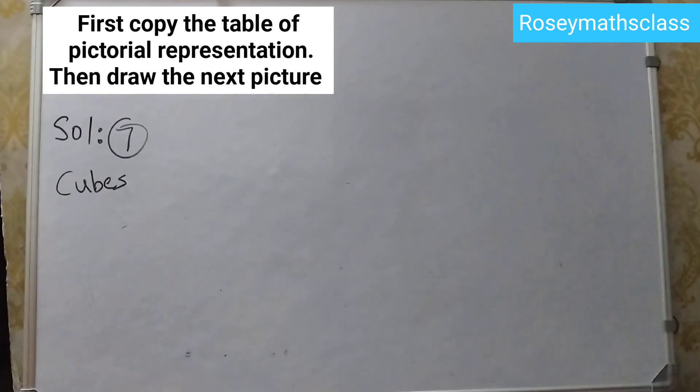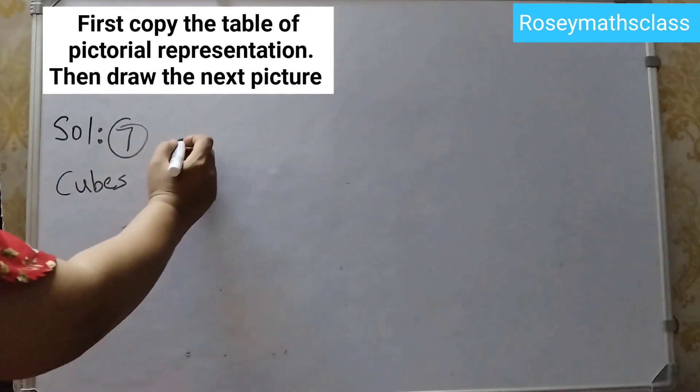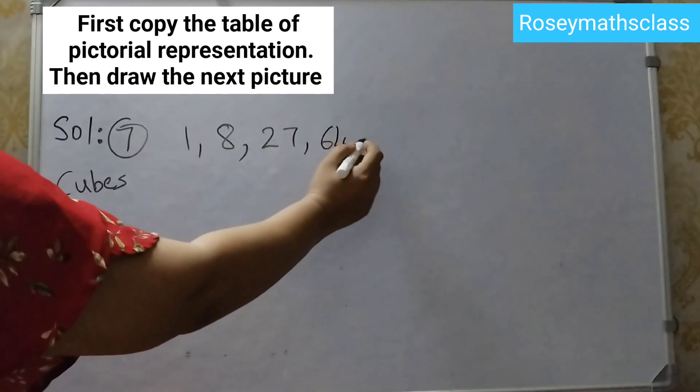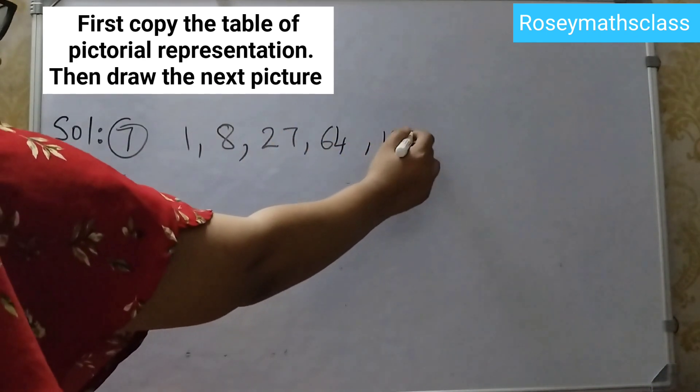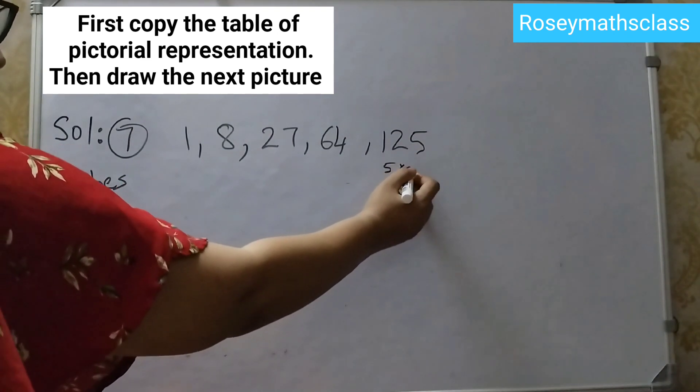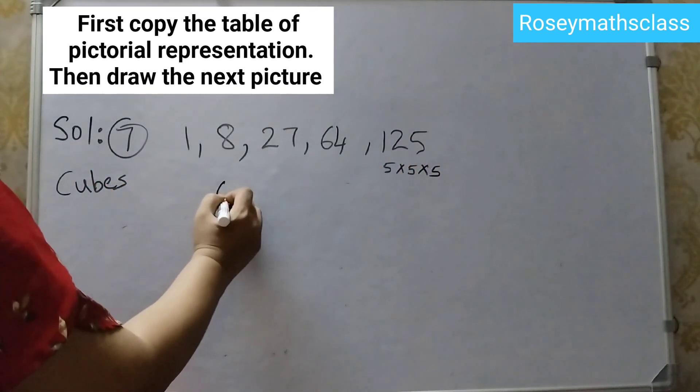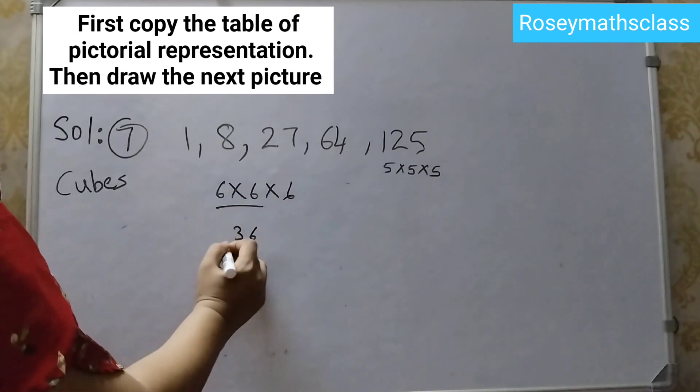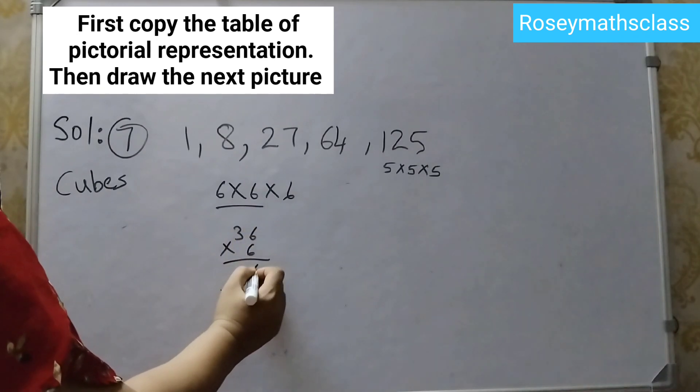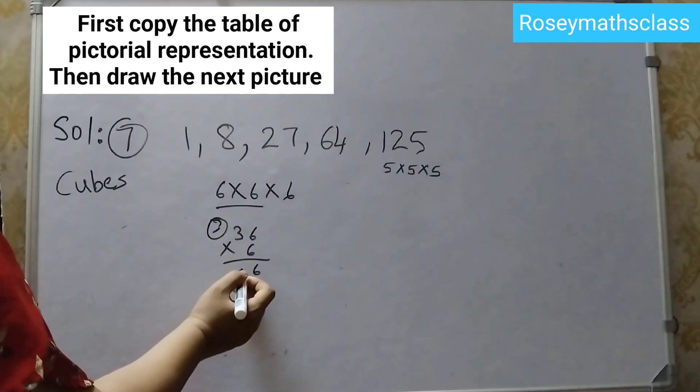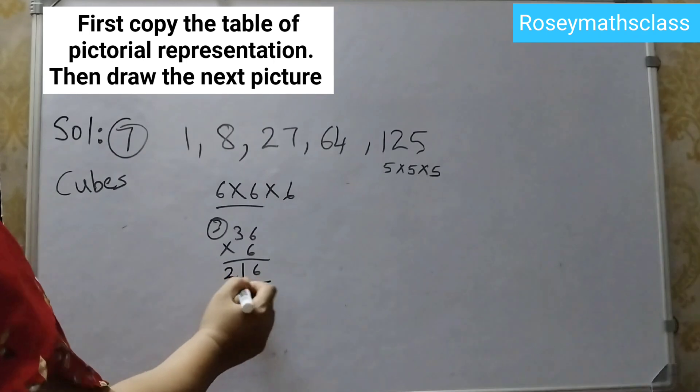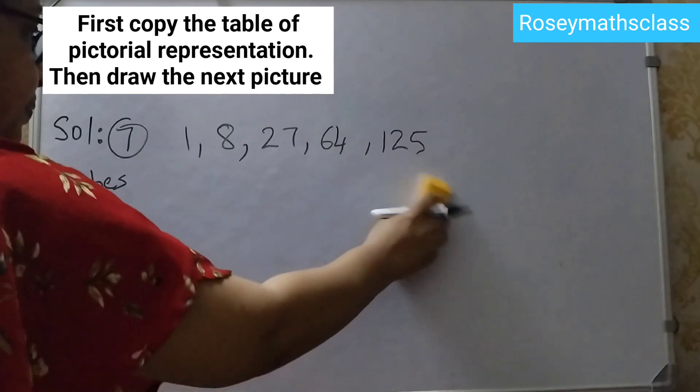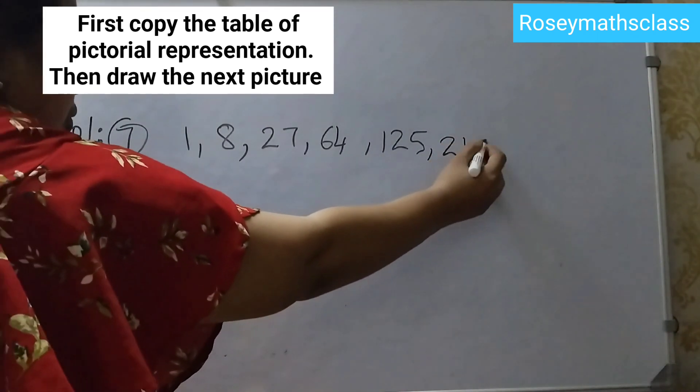And the last one is cubes. It's given as 1, 8, 27, 64, 125. So this is 5 cubed, 5 into 5 into 5. So the next one will be 6 into 6 into 6. 6 times 6 is 36, 36 into 6 is, 6 times 6 is 36, 3 carry over, 6 times 3 is 18 plus 3 is 21. So 216, the next number will be 216. This you need to show.